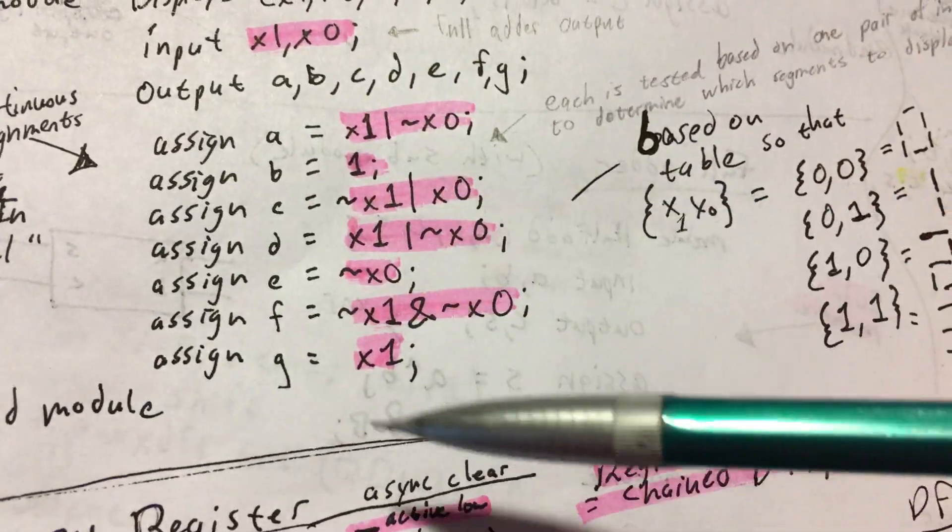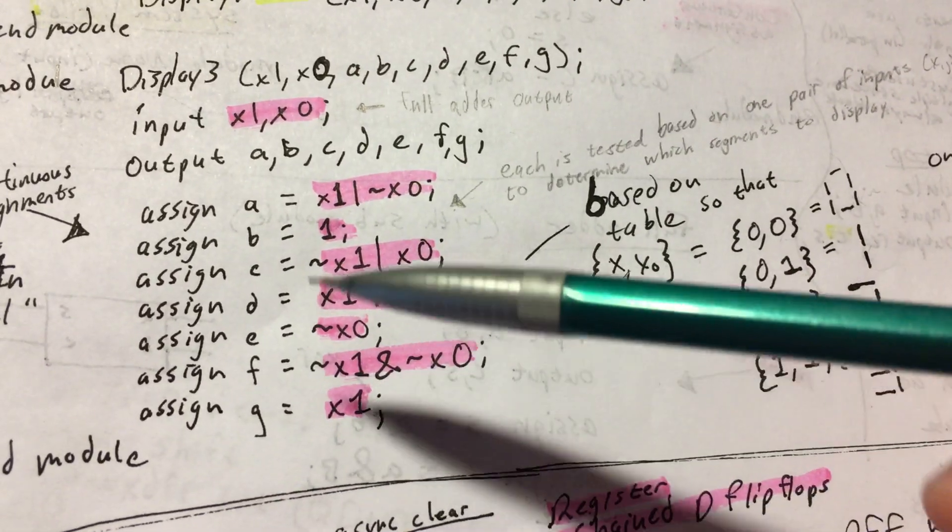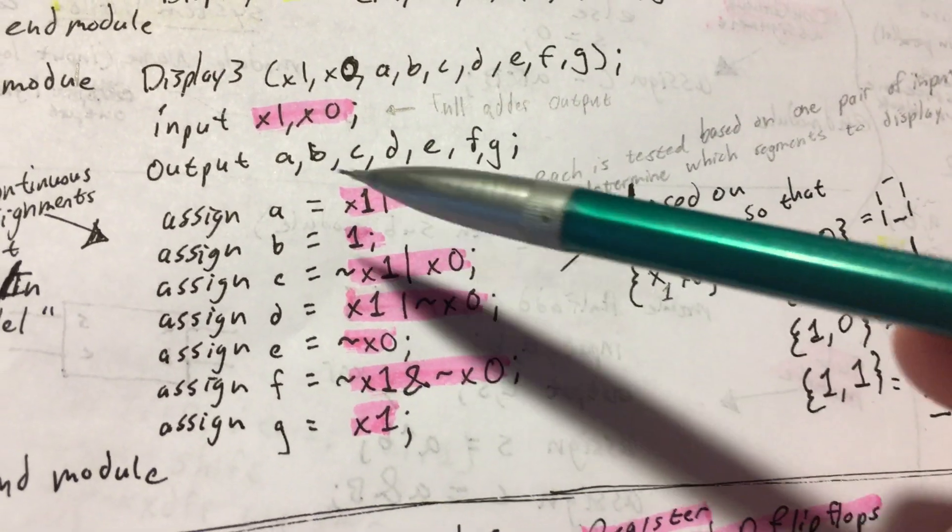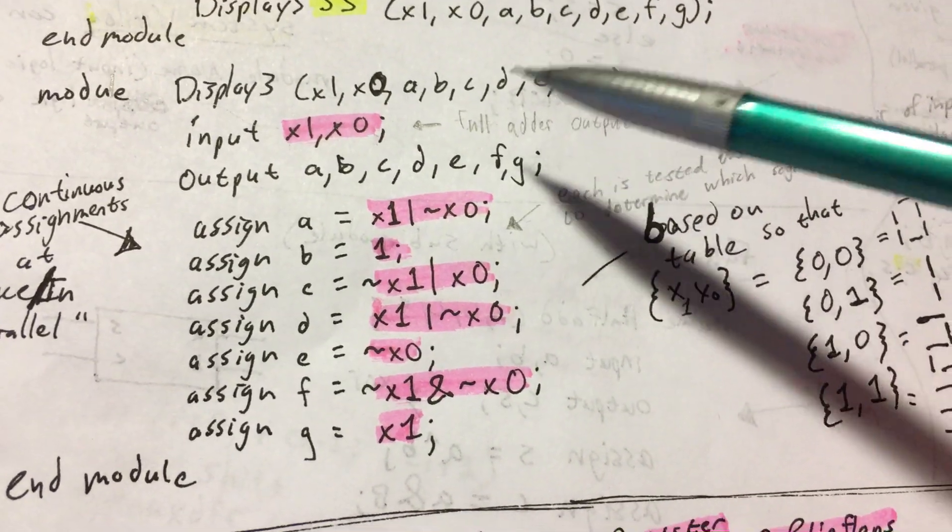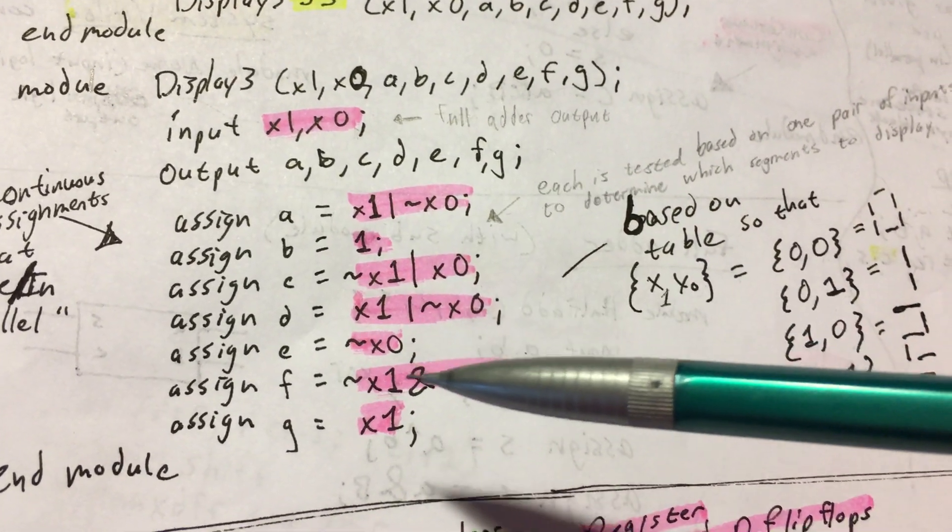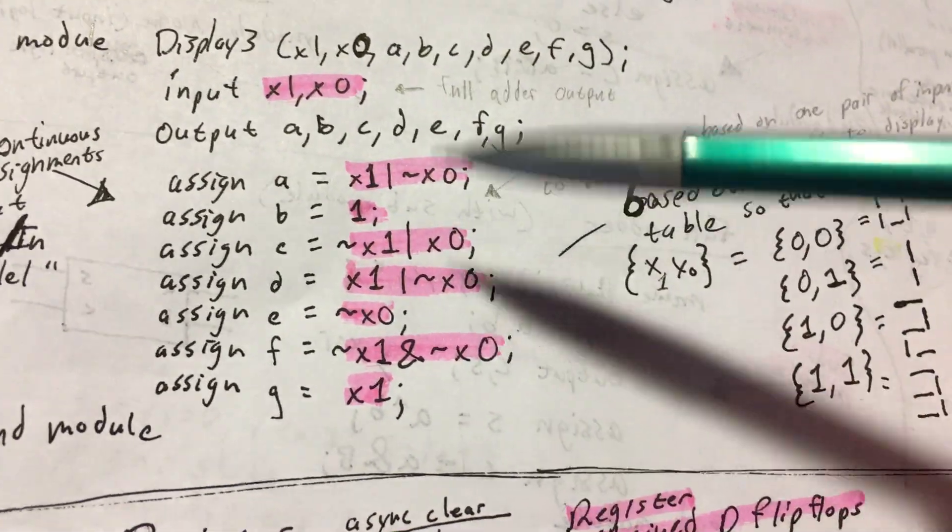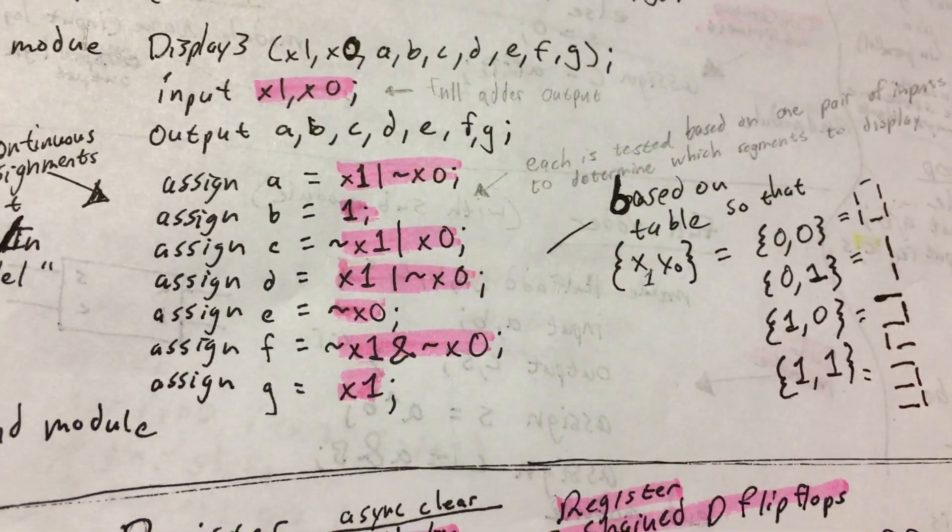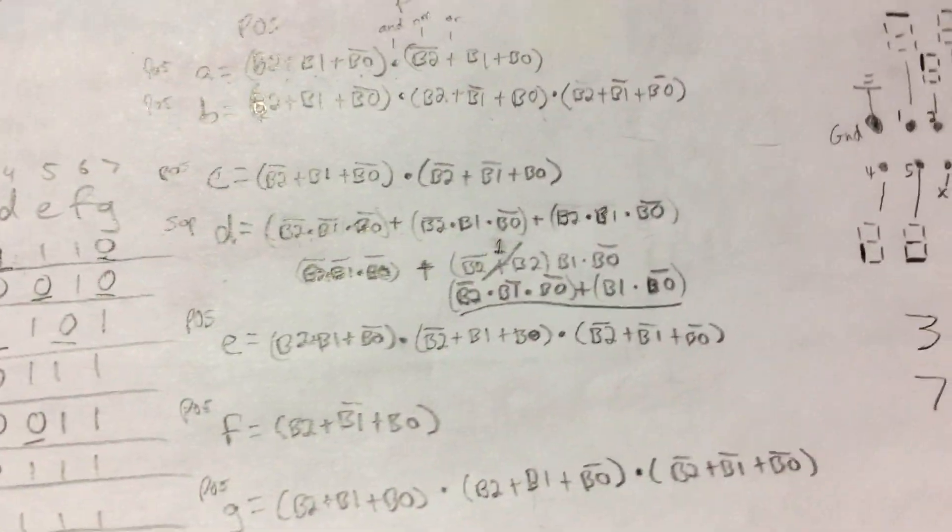Now, these are all continuous and simultaneous in hardware. It's not a sequential program like you might be used to with C. And any time one of these changes, it's going to recalculate and give you a new output. Now, you can tell how much simpler two inputs makes it compared to this logic for three.